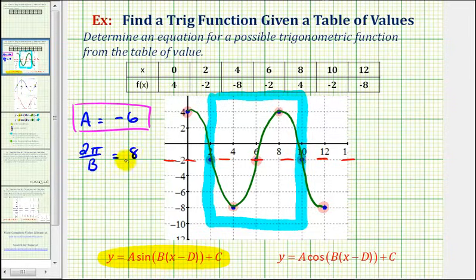We need to solve this equation to determine B. Multiply both sides by B. We have two pi equals eight B. Divide both sides by eight. So we have B equals, this simplifies to one pi over four, or just pi over four.